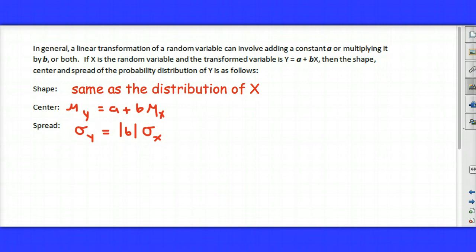As far as the center, we saw that when a value was added, the center had that value added, the mean had that value added, and when it was multiplied by a value, the mean also was multiplied by that value. And for a spread, adding a number doesn't change the spread. Just multiplying by a constant would change the spread of the random variable. So this should sound somewhat familiar. It should sound like some things that we were working on earlier in the year.